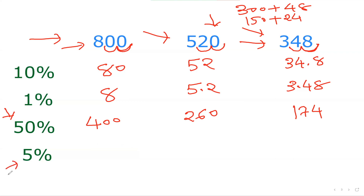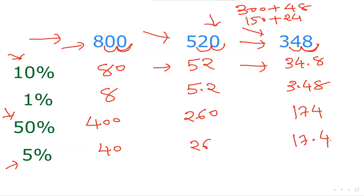To get 5 percent, just focus on your 10 percent and make it half. My 10 percent of 800 is 80, so 5 percent is half of 80, which is 40. My 10 percent of 520 is 52, so 5 percent is 26. My 10 percent of 348 is 34.8, so 5 percent is 17.4. Alternatively, from the 50 percent, move the decimal one step to the left to get 5 percent — giving 40, 26, and 17.4 respectively. So now we know 10 percent, 1 percent, 50 percent, and 5 percent of any number.